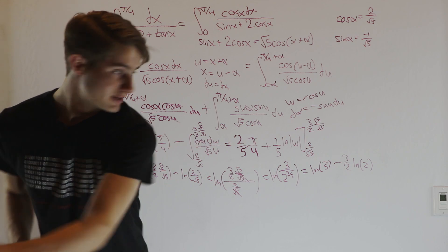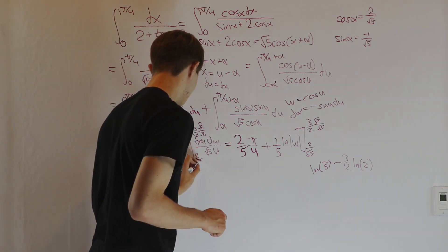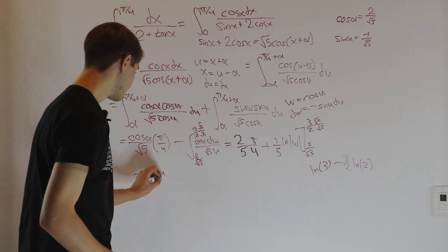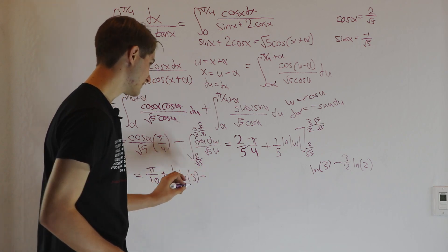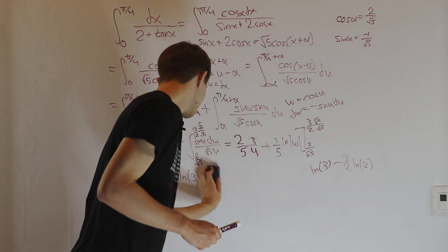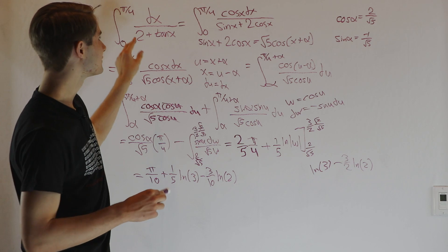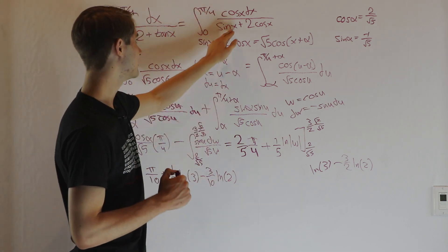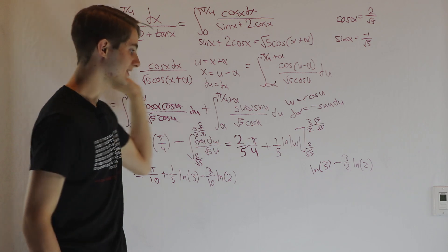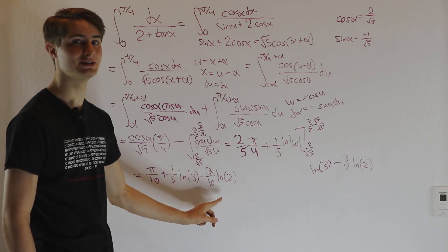Putting it all together: the first part gives (2/5)·(π/4) = π/10, and the second part gives (1/5)·ln 3 − (1/5)·(3/2)·ln 2 = (1/5)·ln 3 − (3/10)·ln 2. So the final answer is π/10 + (1/5)·ln 3 − (3/10)·ln 2. The key technique here: when you have a sine x plus something cosine x in the denominator, the harmonic addition theorem lets you do a u-substitution, expand, and evaluate.